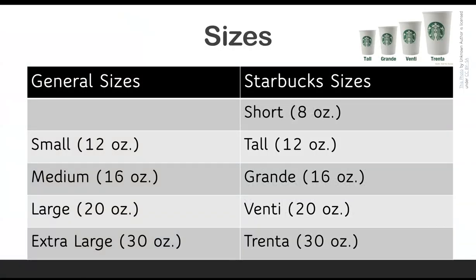Next are the different sizes. So general sizes are: small, which is usually 12 ounces; medium, 16 ounces; large, 20 ounces; and extra large, 30 ounces.